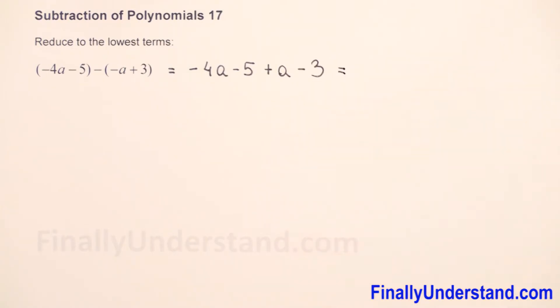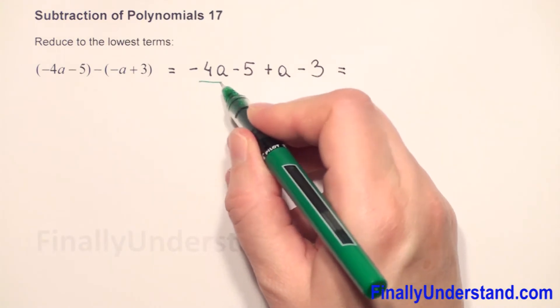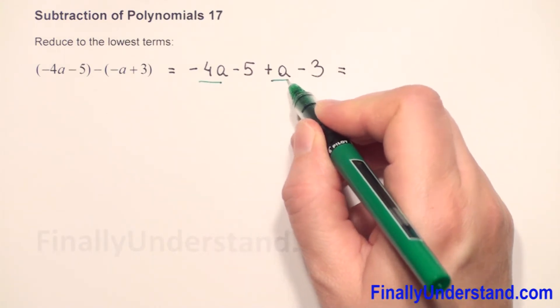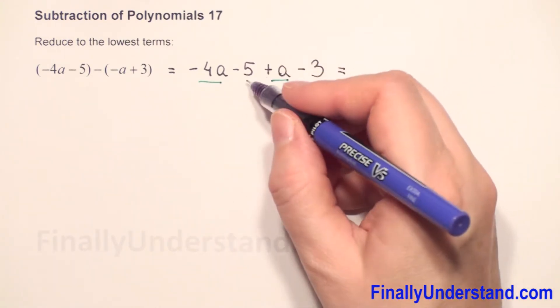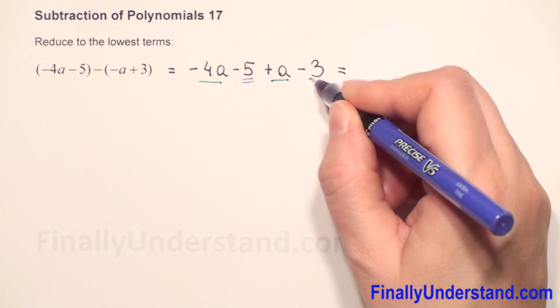And now we have to combine the like terms. We have negative 4a and a, and we have negative 5 and negative 3.